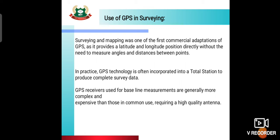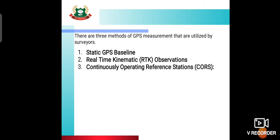There are three methods of GPS: static GPS baseline, real-time kinematic (RTK) observation, and continuously operating reference station (CORS).